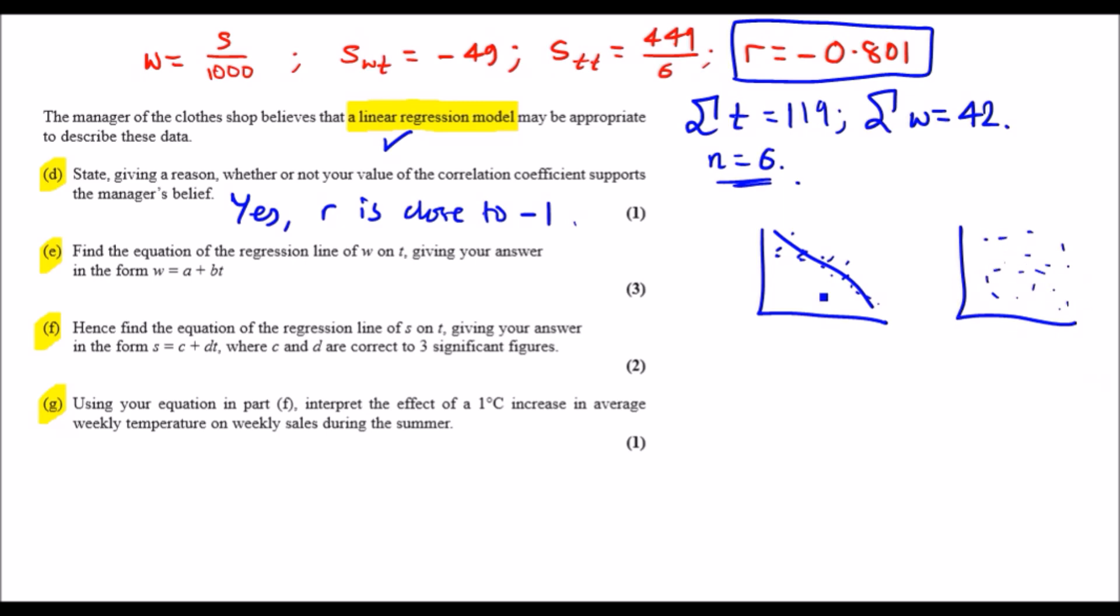So we'll say yes, because R is close to minus one and this supports the method. If R is less than 0.5 or around zero, then it wouldn't make sense to draw a line of best fit, so it does not support it. E: Find the equation of the regression line of W on T. So this is very important - W on T.